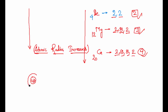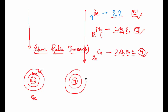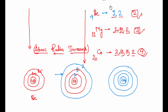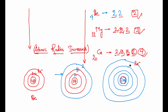Looking at the diagrams: beryllium has 4 protons and only 2 shells — 2 electrons in each. Magnesium has 12 protons with 3 shells, configuration 2, 8, 2. Calcium has 20 protons with 4 shells — first shell, second shell, third shell, and fourth shell — with 2, 8, 8, and 2 electrons respectively. Each added shell increases the atomic radius further.